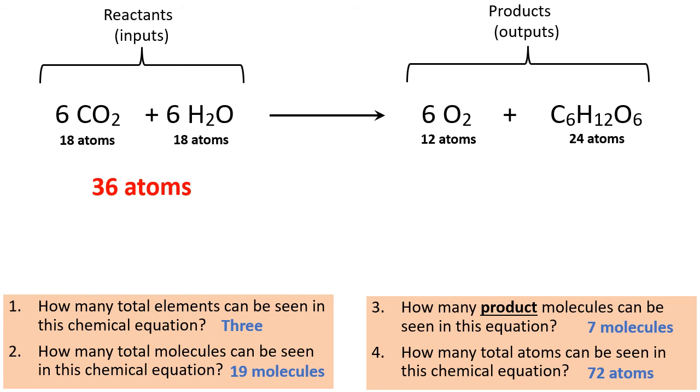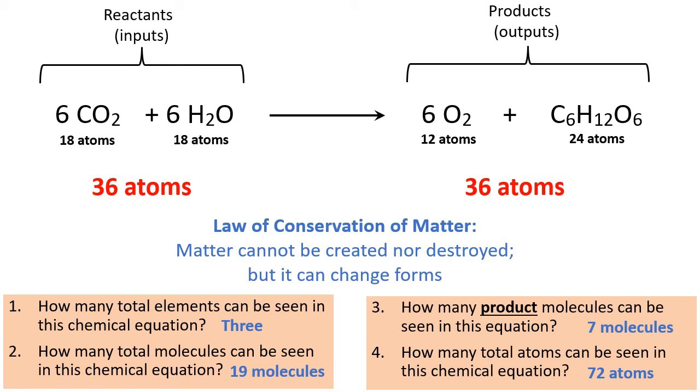Now, what you also might notice is that there's 36 atoms on the left of the arrow, the reactants, and 36 atoms in the products. That's not a coincidence. You are always going to see the amount of reactant atoms equal to the amount of product atoms. This is because of the law of conservation of matter, which states that matter cannot be created nor destroyed, but it can change forms. So the atoms of the reactants changed forms from carbon dioxide and water into oxygen and glucose. That's what happens during photosynthesis, the molecules change forms.